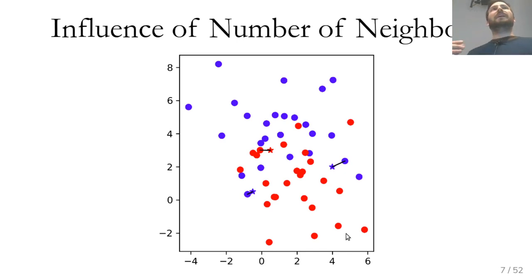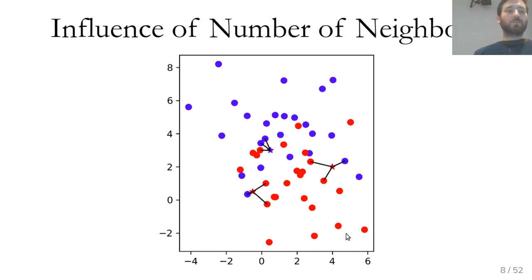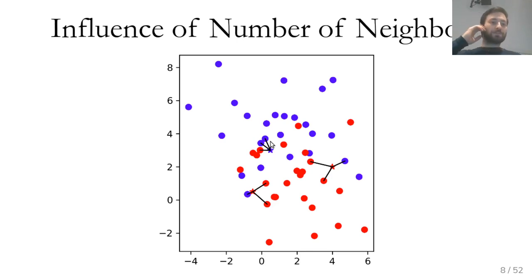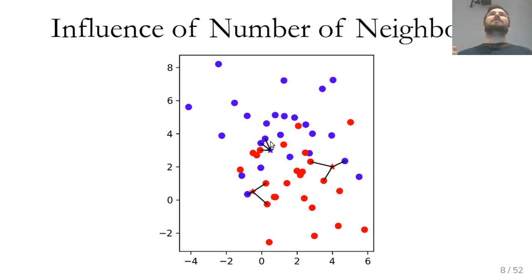By setting the K parameter, we can use more than one neighbor — the K nearest neighbors each vote for the most frequent class. For example, with K=3, if two neighbors are blue and one is red, the point is labeled blue. The choice of K has a big impact on the algorithm's decisions. This is a classical example of a hyperparameter: not learned from data, but specified in advance.